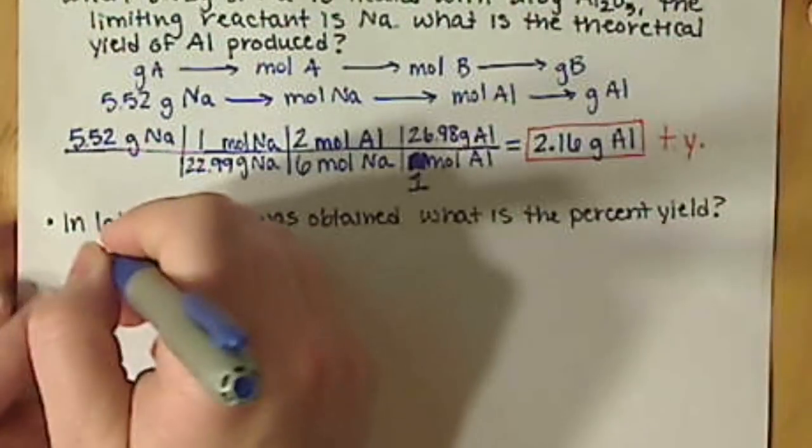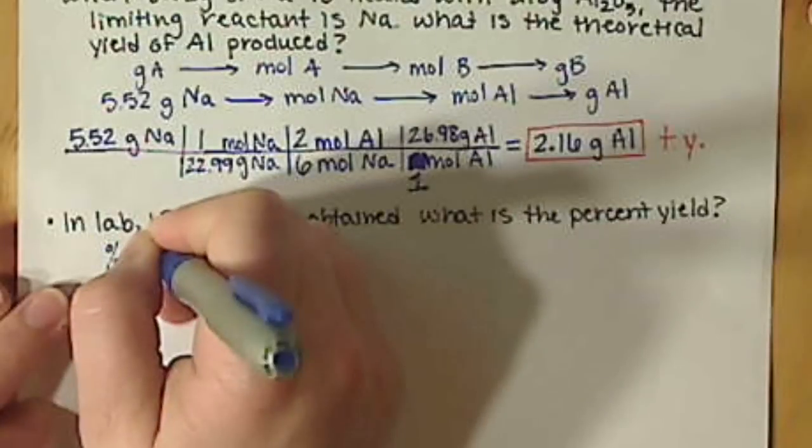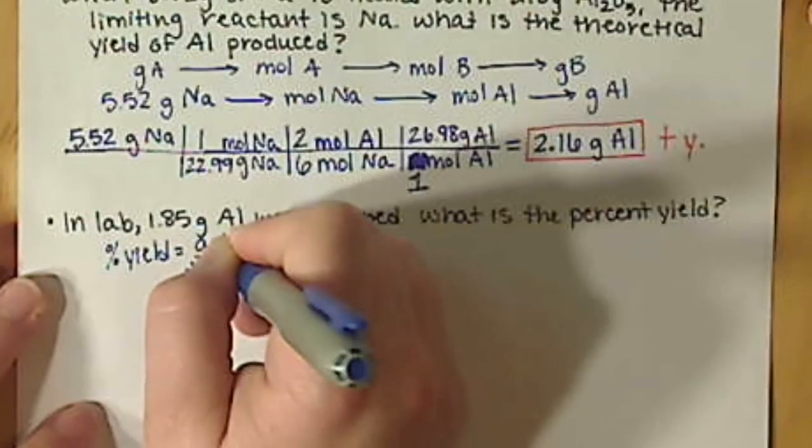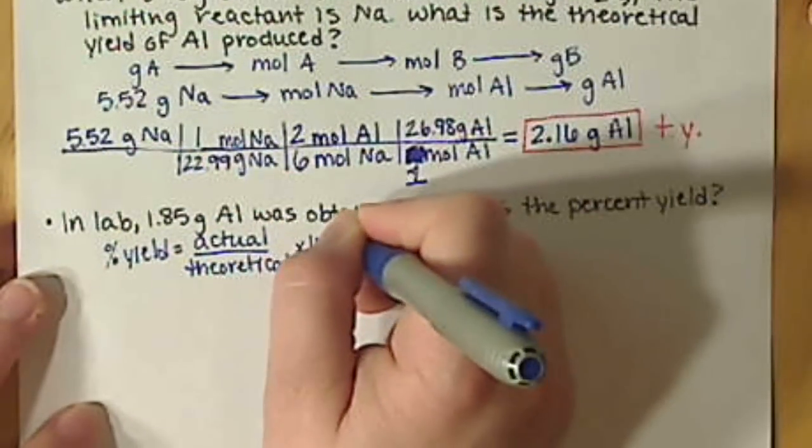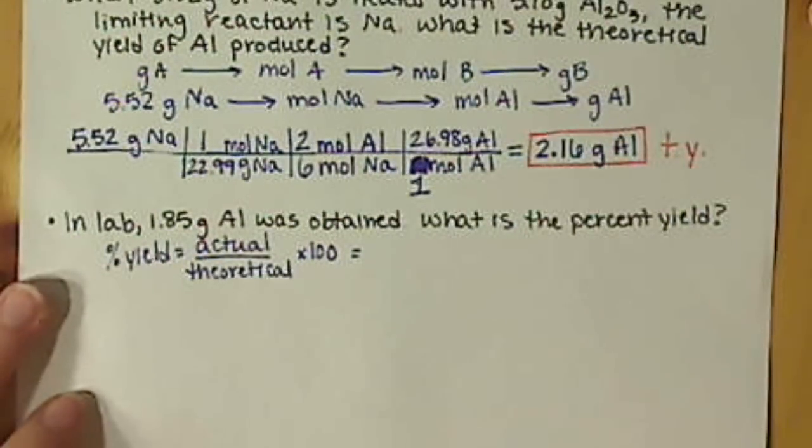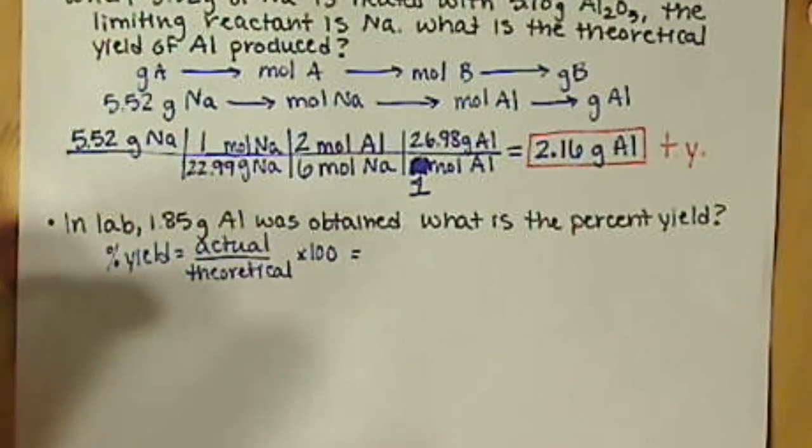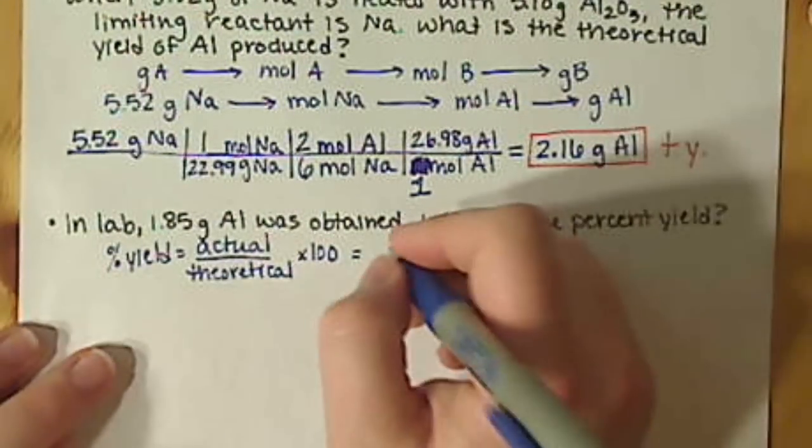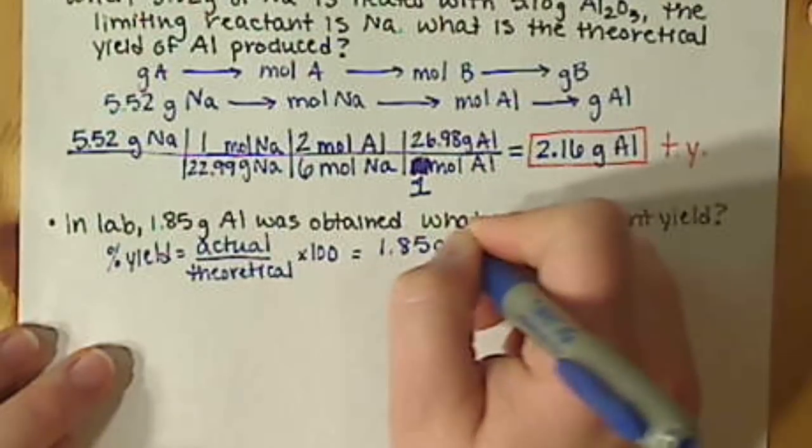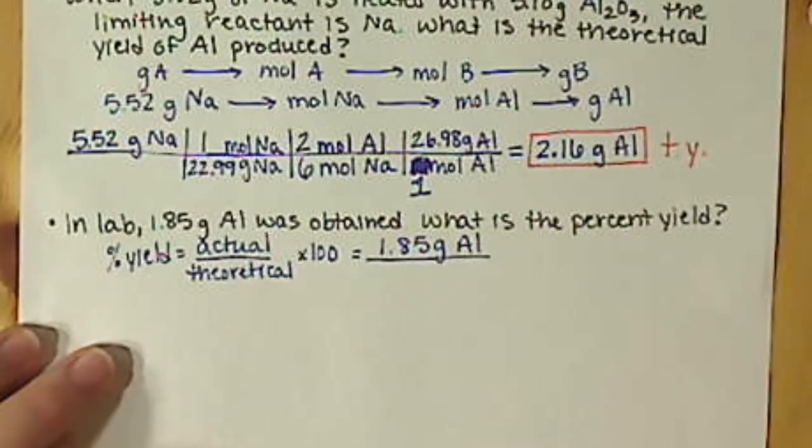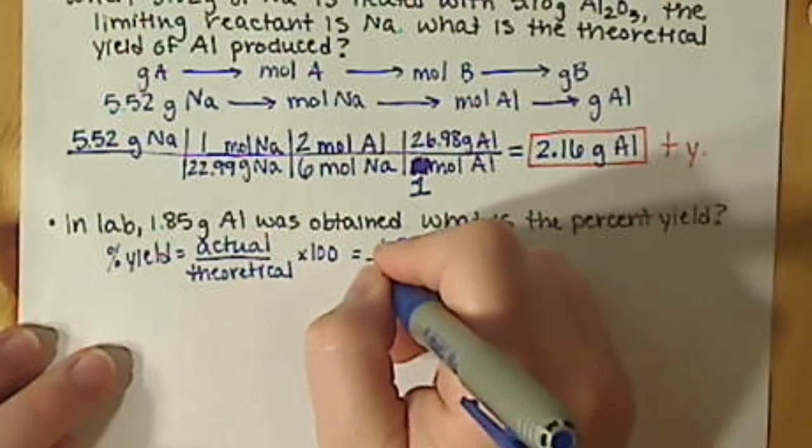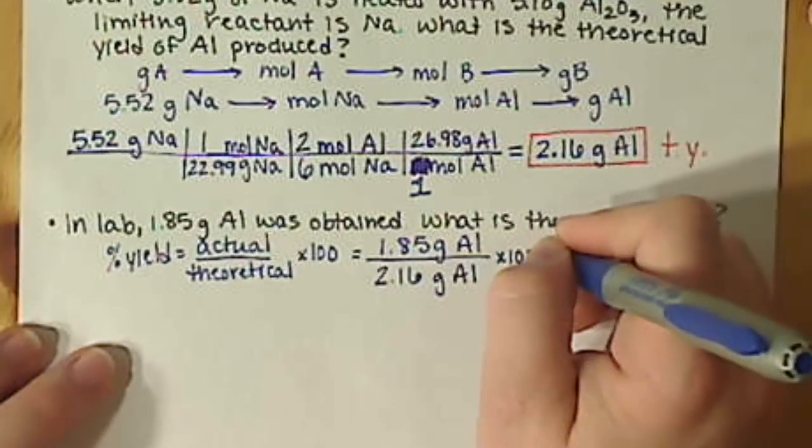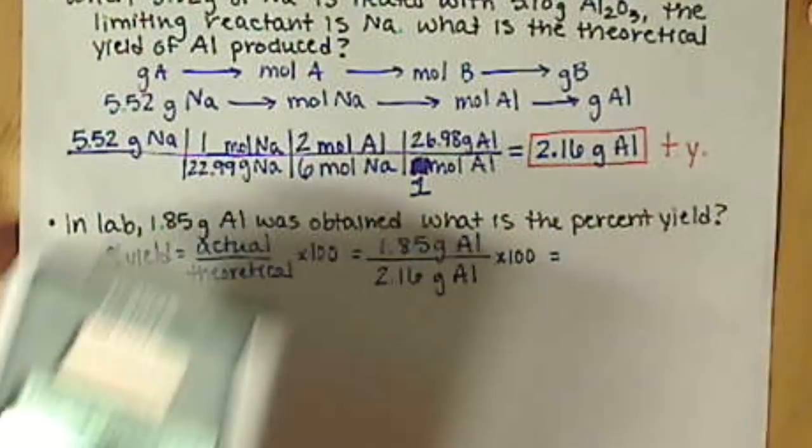So remember our equation for percent yield is our actual yield divided by our theoretical and times by 100. So our actual, remember, is something that has to be given to us. It's what is physically received or formed in the lab. So in this case, that's our 1.85 grams of aluminum. In theory, we should have produced 2.16 grams of aluminum.